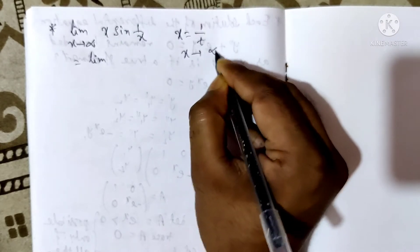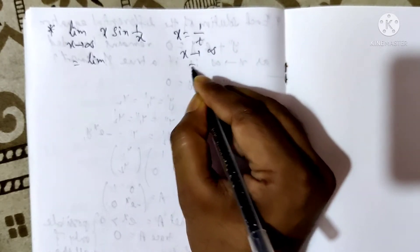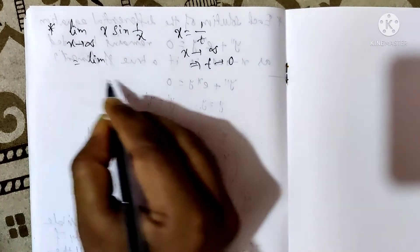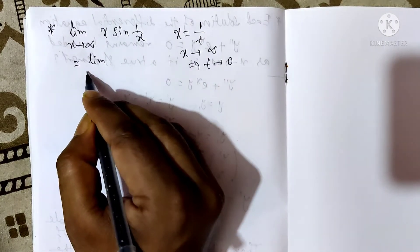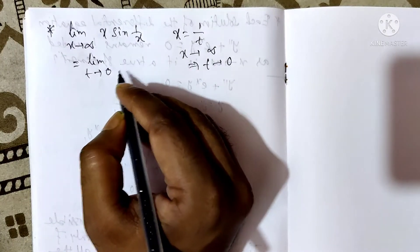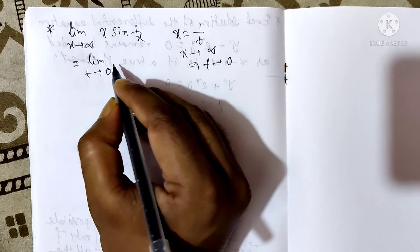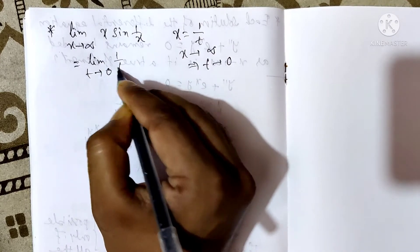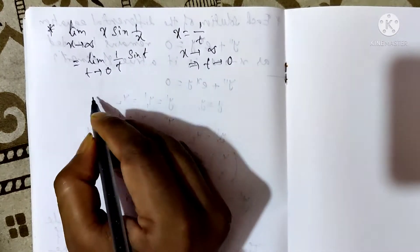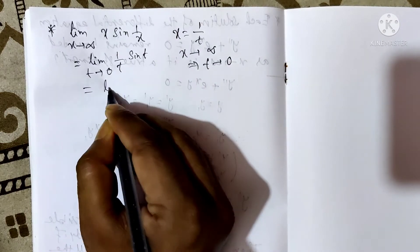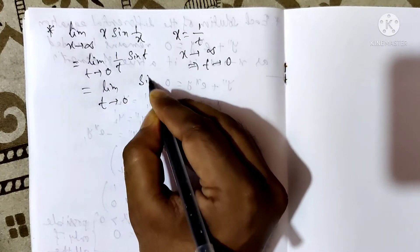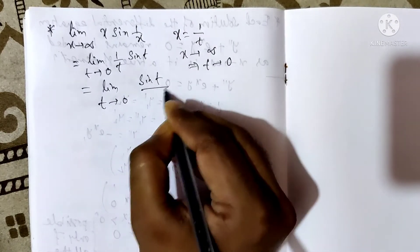As x tends to infinity, that implies t tends to 0. That equals the limit as t tends to 0 of (1/t)·sin(t), which means (1/t) and sin(t), that equals the limit as t tends to 0 of sin(t)/t.